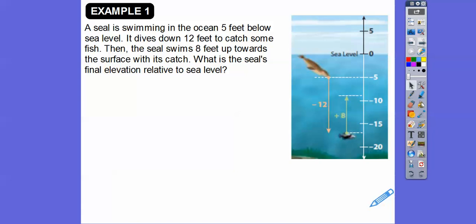Here's our first example. A seal is swimming 5 feet below the sea level right there. Here's the sea level, so here's the seal 5 feet below. And then the seal dives down 12 feet down here to catch some fish. And the seal swims up 8 feet right here towards the surface with its catch. What's the seal's final elevation?